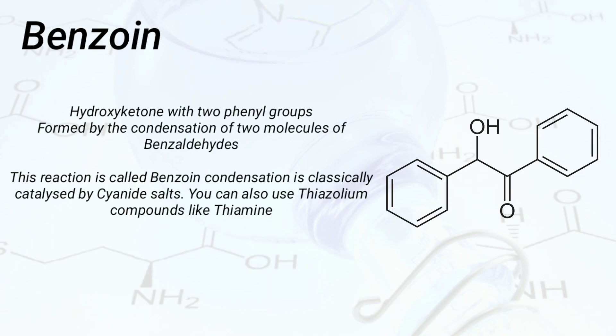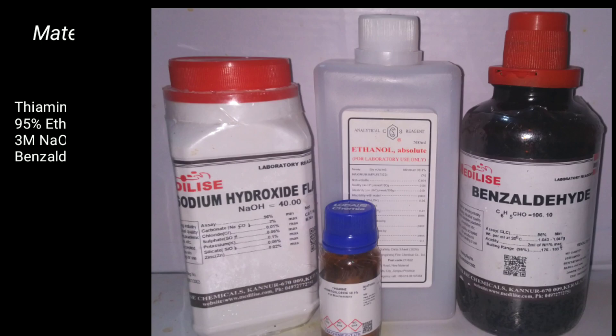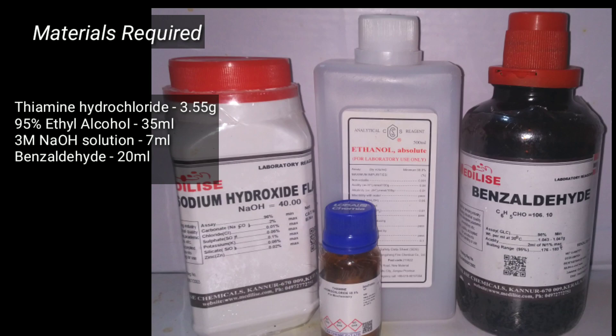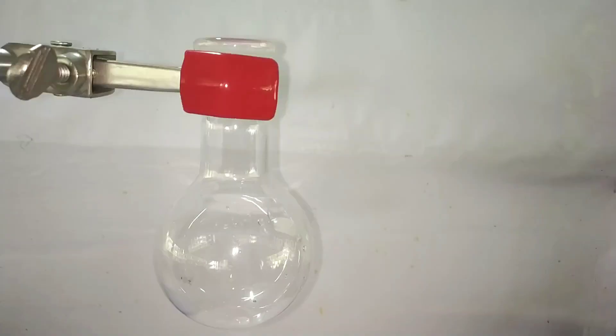This reaction is called benzoin condensation and is classically catalyzed by cyanide salts. You can also use compounds like thiamine. Materials required include 3.55 grams of thiamine hydrochloride, 35 milliliters of 96% ethyl alcohol, 7 milliliters of 3 molar sodium hydroxide solution, and 20 milliliters of benzaldehyde.